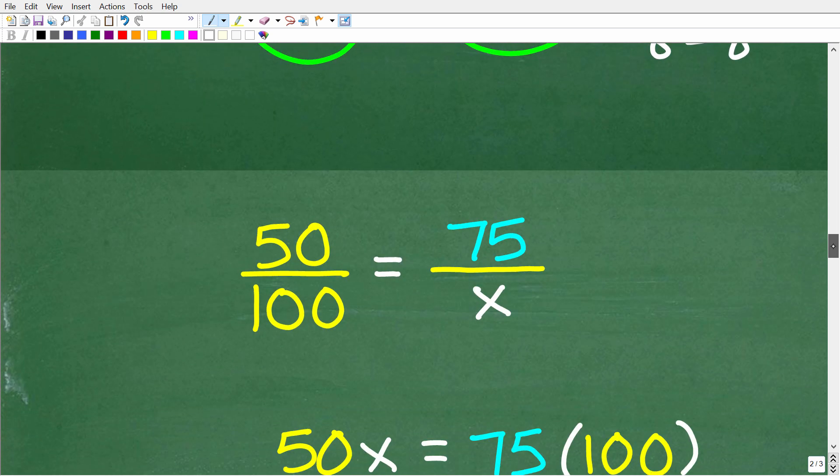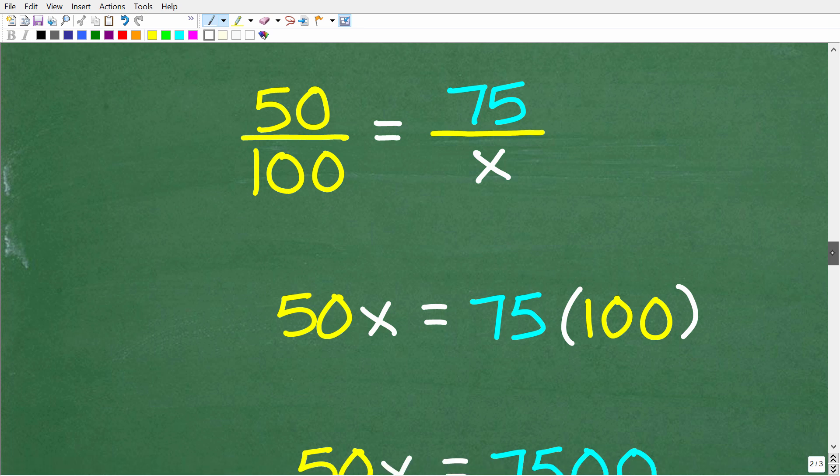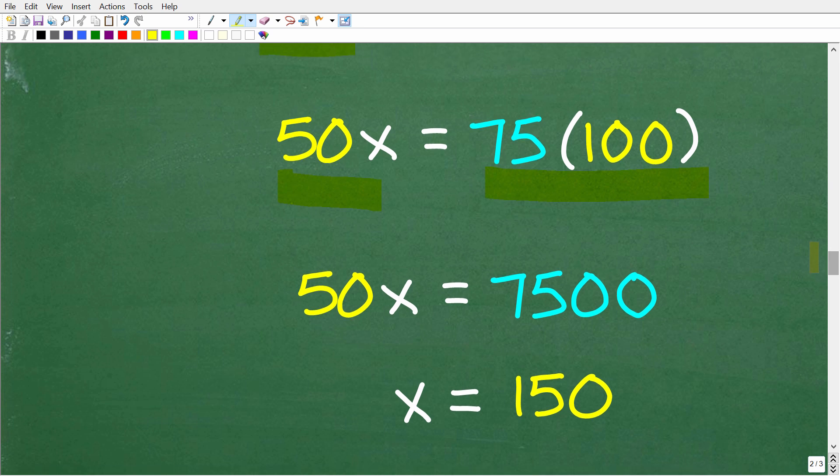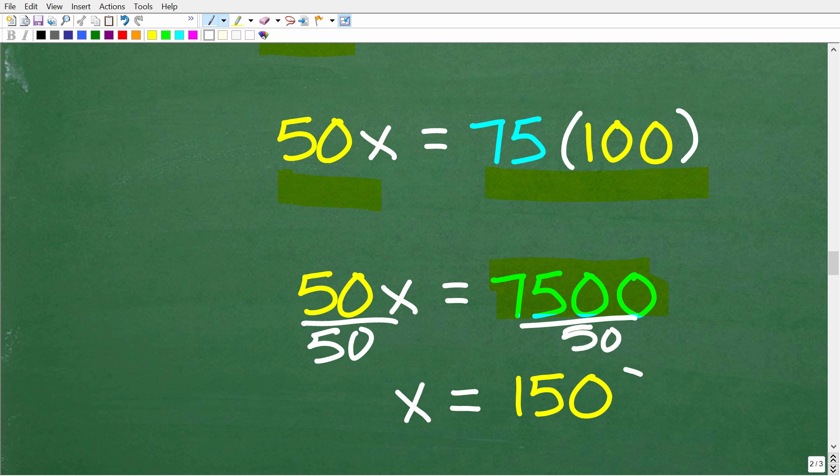We have 50 over 100 is equal to 75 over x. We're going to use the cross product. 50 times x is 50x. 100 times 75 is 75 times 100. Feel free to use your calculator, but the math is pretty simple. 50x is equal to 75 times 100, which is 7,500. To solve for x, all we have to do is divide both sides of the equation by 50. 7,500 divided by 50 is 150.